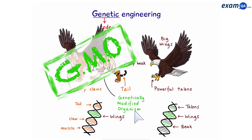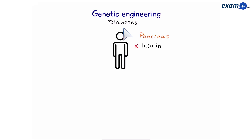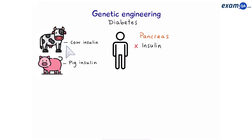Putting wings on a tiger might be a little bit too far-fetched, so let's talk about examples of genetic engineering that is used today. In diabetes, the pancreas cannot produce enough insulin. In the past, people who had type 1 diabetes would usually get their insulin from animals, such as cows and pigs, which would be injected into the person.